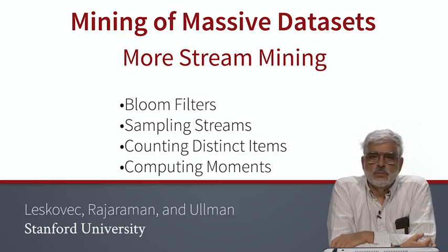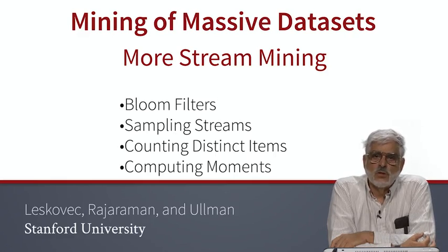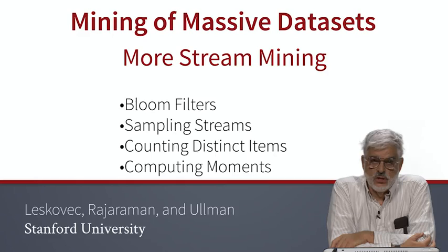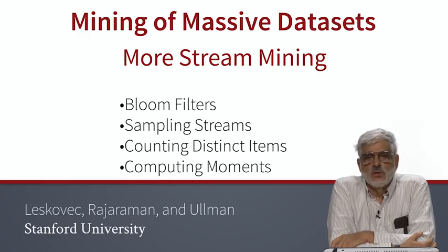First, we'll look at bloom filters. This trick enables us to select only those items in a stream that are on some list of items, even if the number of items on the list is so large that we cannot do a comparison of each stream element with each element of the list. Next, we'll look at random sampling of streams in a way that allows us to be consistent about which items we select, even if we see an item many times in the stream.